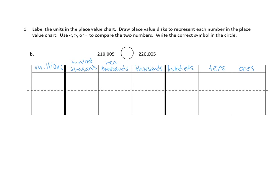So we are going to label units in the place value chart and draw place value disks to represent each number. I'm going to do our first number in a black pen, just so we can differentiate them. Let's look at how many thousands we have — we have two hundred and ten thousand. So we have two in the hundred thousands spot, one ten thousand, and no single one thousands. Then zero hundreds, zero tens, and five ones — one, two, three, four, five.